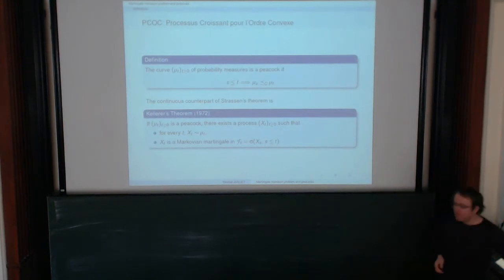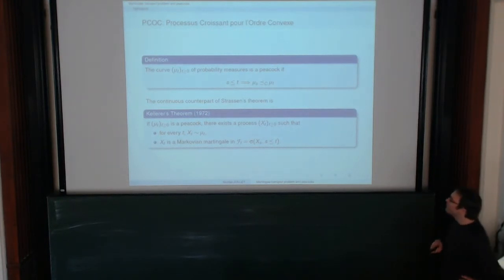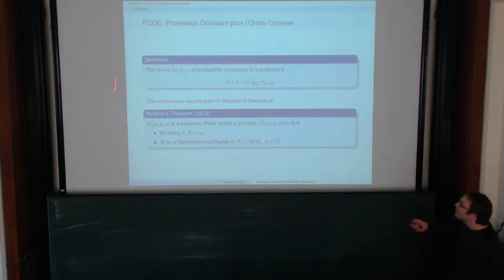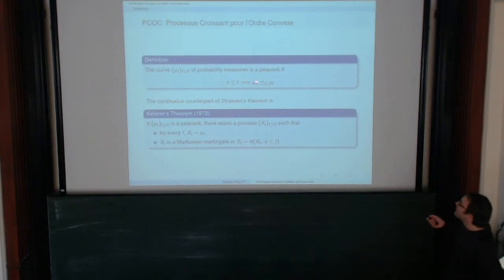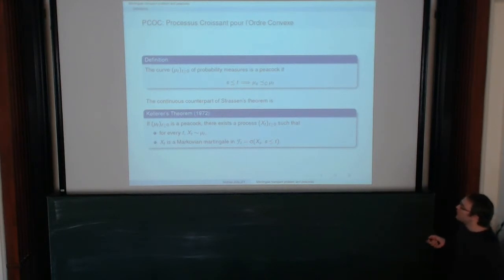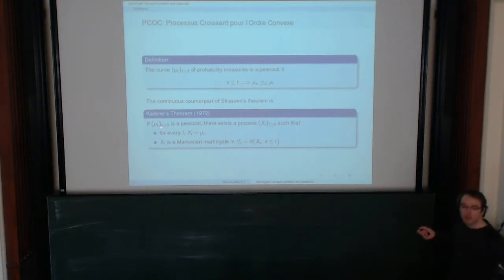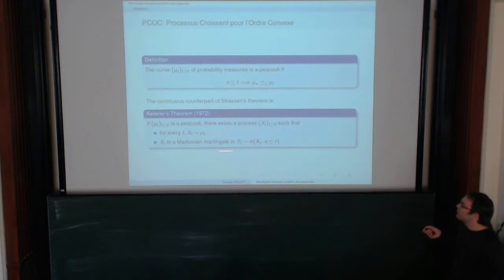There is something almost the same as the Strassen theorem — that is the Kellerer theorem. But now you have more than two probability measures; you have a family of probability measures that are increasing in the convex order. This gives, in French, a 'processus croissant pour l'ordre convexe'. The question of Peacock is answered by the Kellerer theorem: it is possible to find a martingale X_t such that the one-dimensional marginals are mu_t, and this process is Markovian with respect to itself.